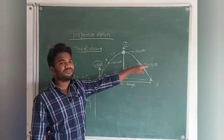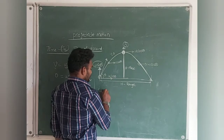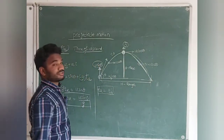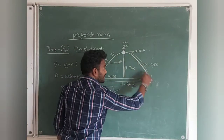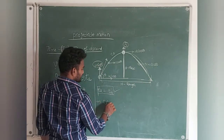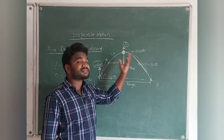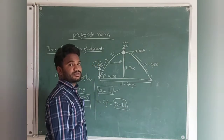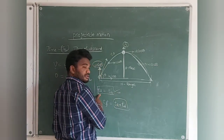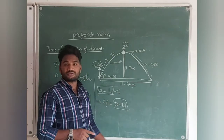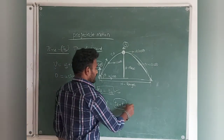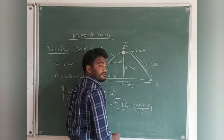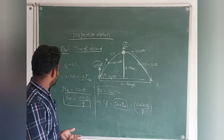Similarly, using the same formula for time of descent, an important result is that time of ascent always equals time of descent — both equal u sin theta / g. Time of flight is the total time the body stays in the air, which is time of ascent plus time of descent: T = u sin theta/g + u sin theta/g = 2u sin theta / g.